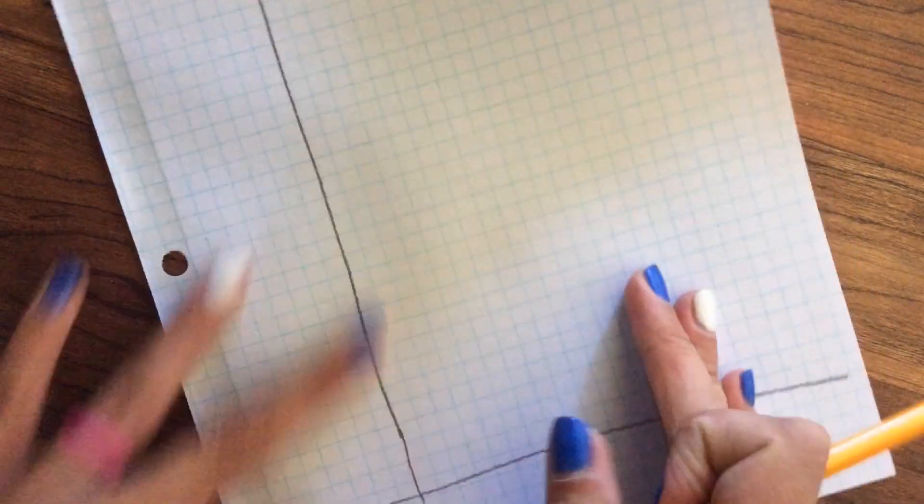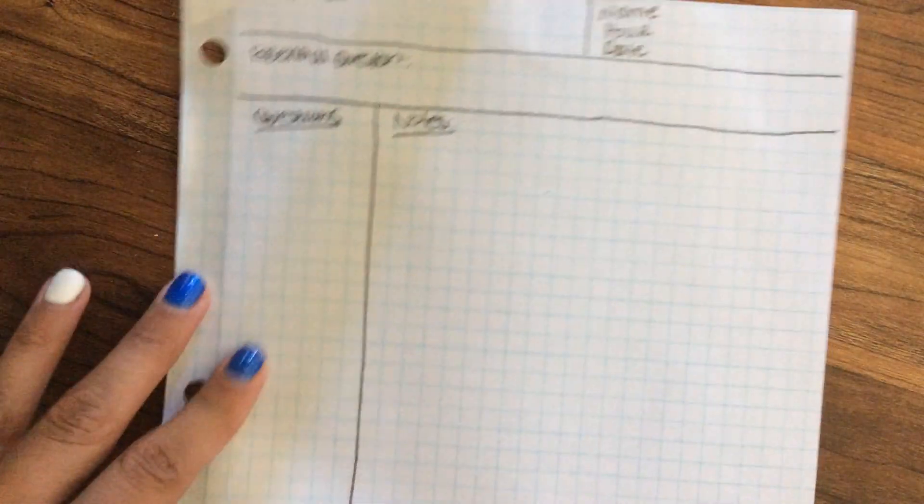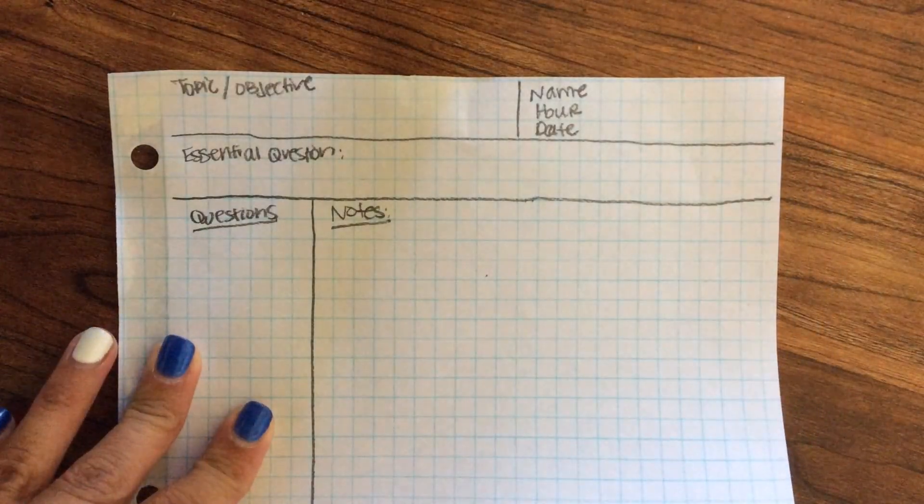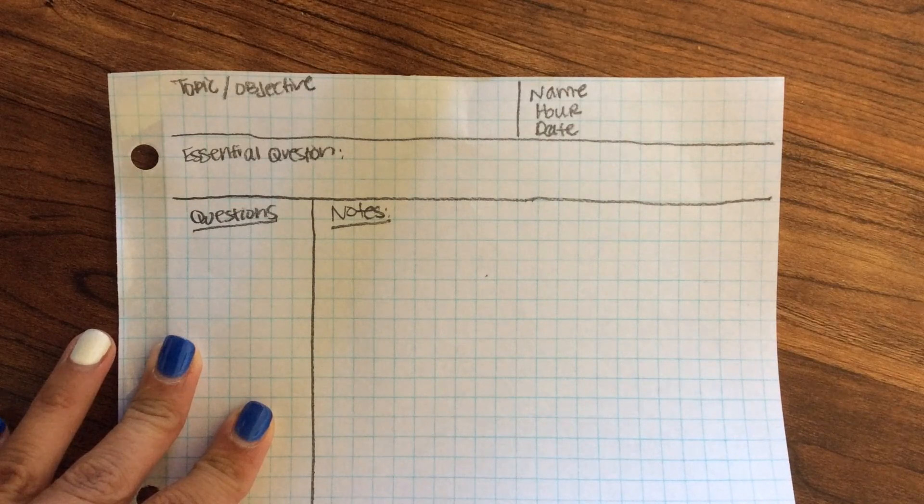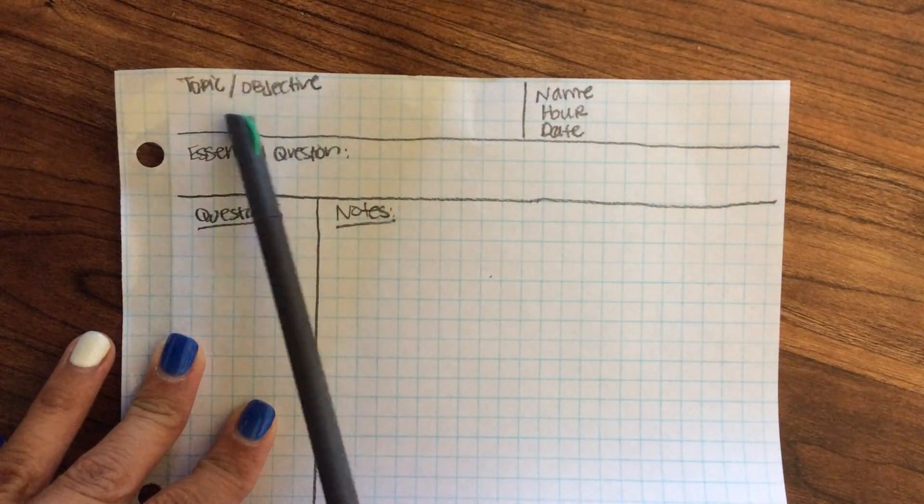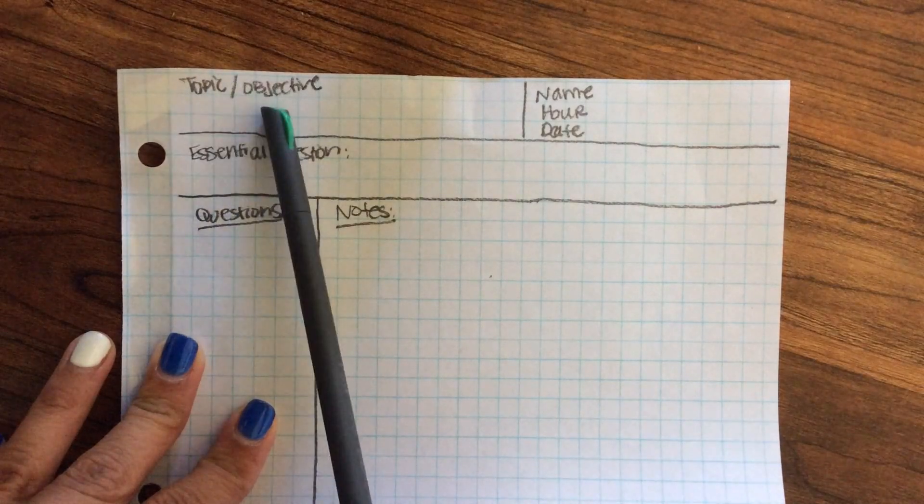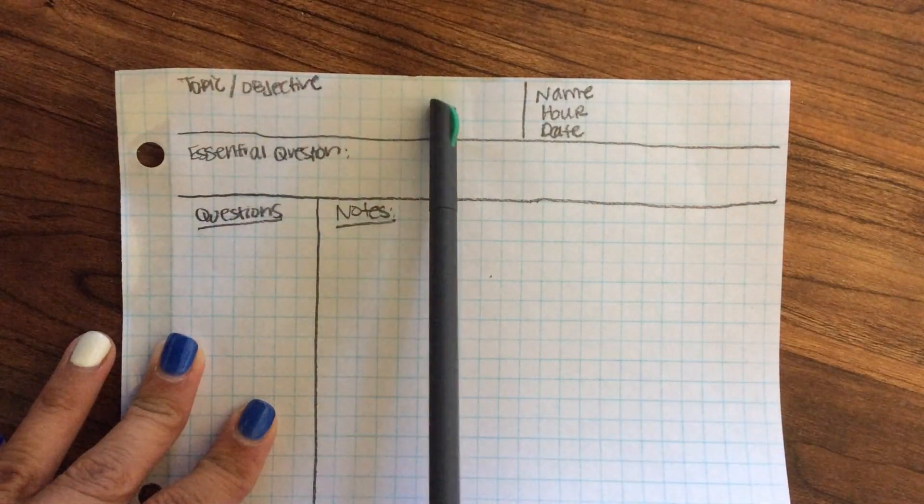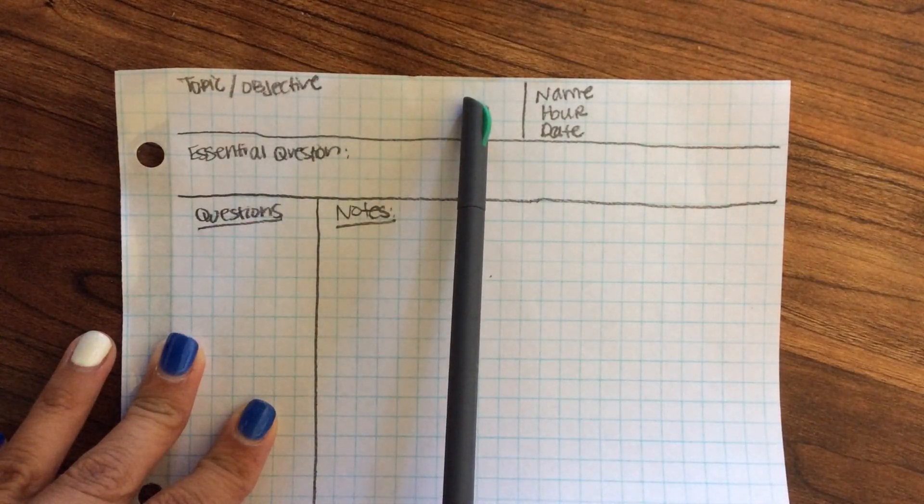And again, here is my setup for my focus notes for AP World History. Now, one last time on the top here is going to be your topic or objective. Usually in AP World History, this is where you are going to put the chapter and the section title as well as the name of that topic.